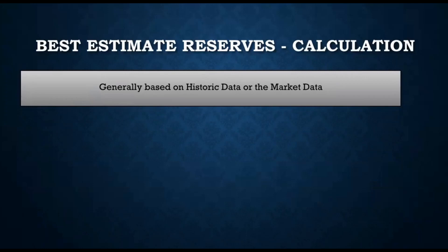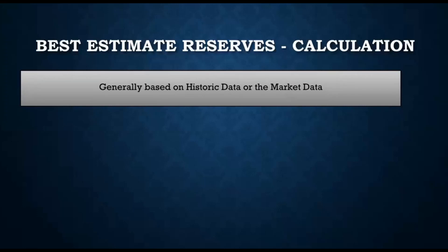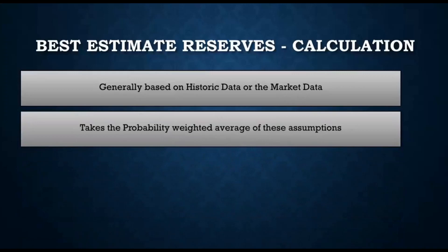Historic data might not be relevant anymore. For example, if the expected mortality rate was two percent ten years ago, improvements in the healthcare sector could have increased the survival rate, changing mortality from two percent to say 1.8 percent today. So directly using historical data may not be appropriate. Therefore, when using historic or current market data, companies use a probability-weighted average for all assumptions. The current market data may also need adjustment because the target market could be different, or for other reasons.